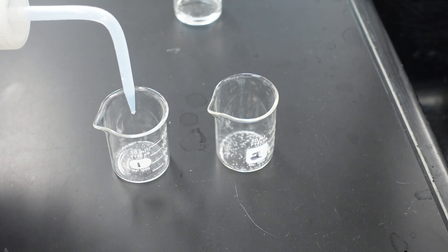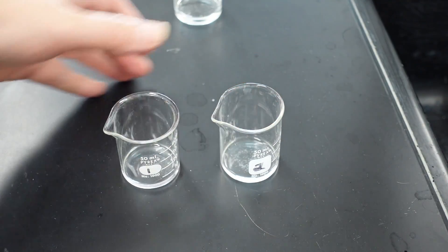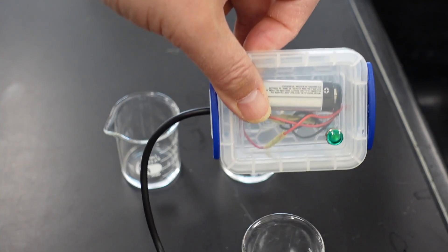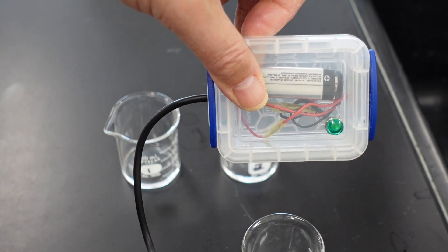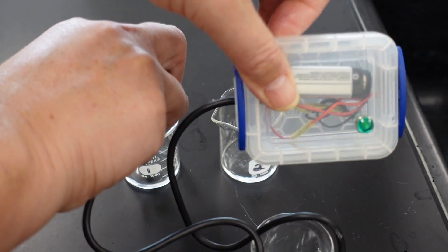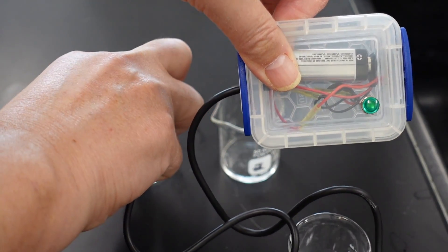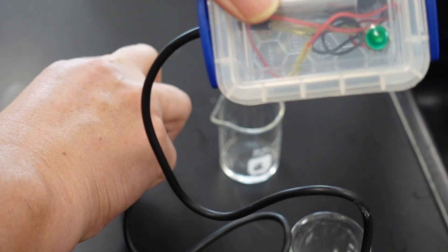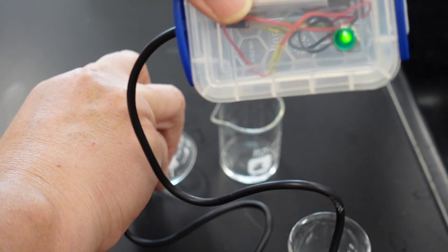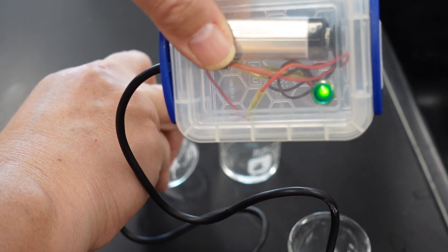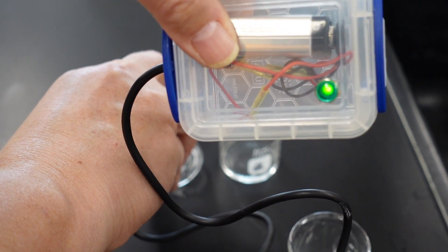So now let's dissolve each of these substances in a little distilled water. Now get ready to test the conductivity. First, we will have a look at substance one. Bright glow or dim glow.